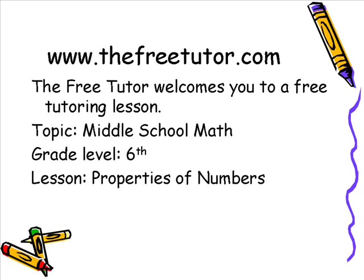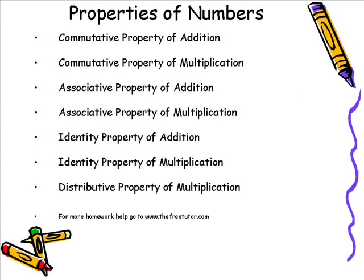Properties of numbers are basically rules for math. Just like in any sport — say for example basketball — if you know the rules of basketball it makes it easier for you to win. The same applies in math. If you know the rules of math it makes it easier to solve a math problem. You should become familiar with as many properties as possible, because this will make it easier as you move into 7th and 8th grade math, pre-algebra, and algebra.